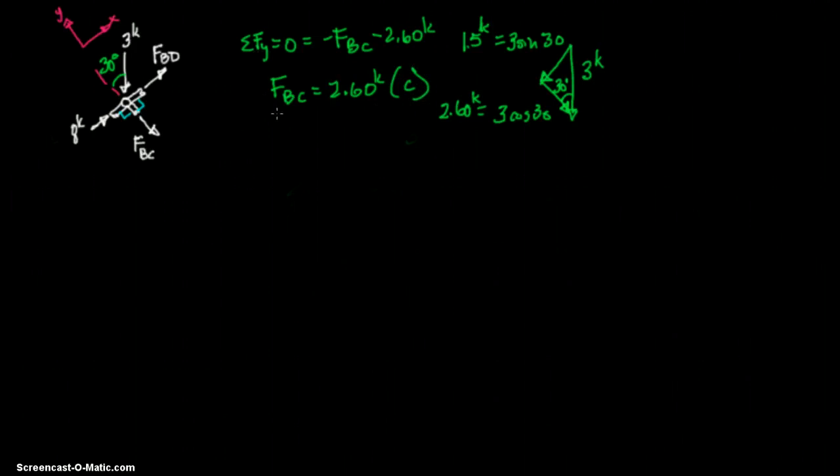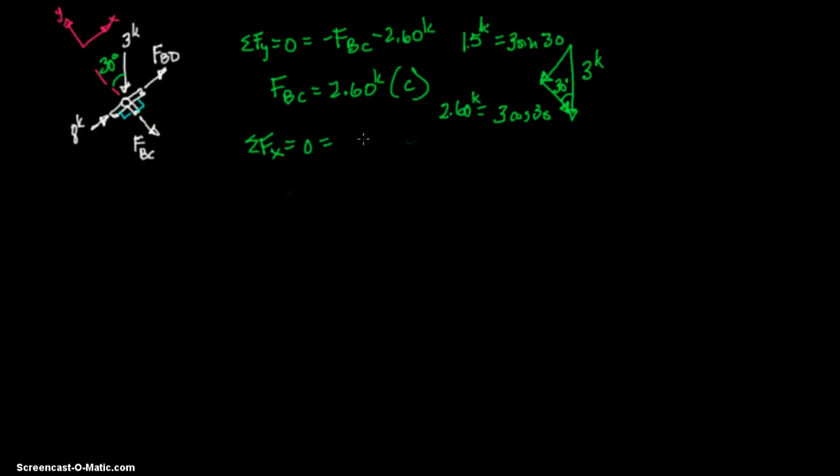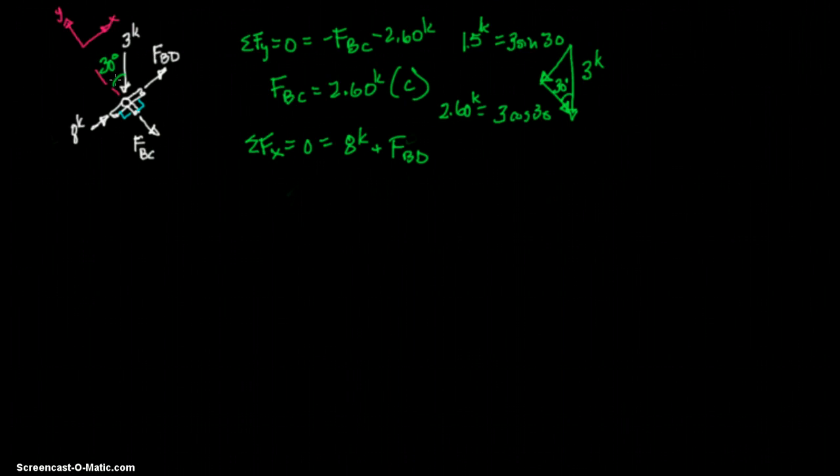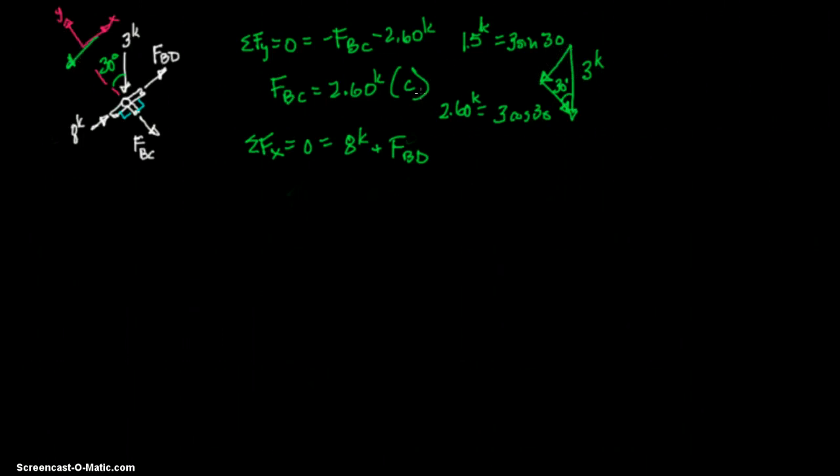And then we're going to solve for the sum of the forces in the x direction equals 0. In the x direction, we have a positive 8 kips. We have FBD, which we've assumed is going positive. We'll find out if that's correct. And then we also have the x component of 3 kips, and that is a negative, since it's going this way, a negative 1.5 kips.